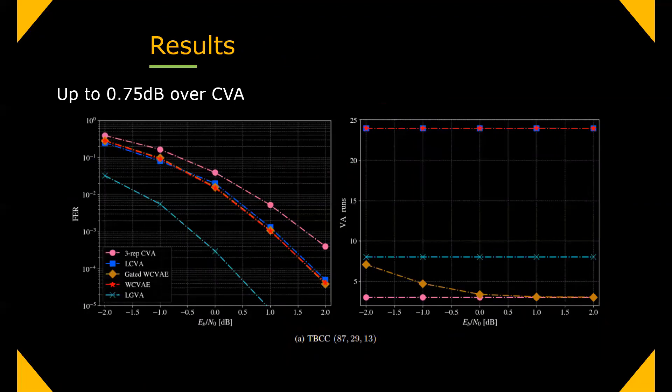Now moving to results, the gated weighted CVA ensemble has similar performance to the non-gated ensemble but with reduced complexity, where complexity is measured in the number of Viterbi runs. Compared with CVA, our approach has gains of up to 0.75 dB with fair average complexity that decreases with the SNR.